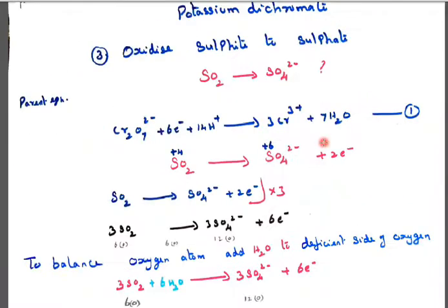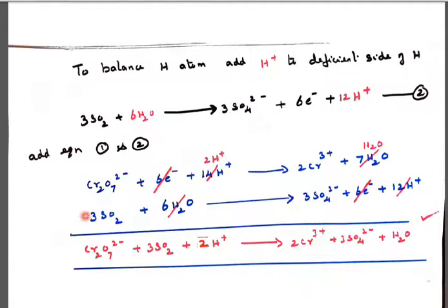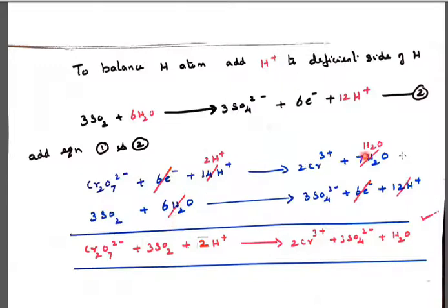Now we can add the first equation and the second equation. First equation: Cr₂O₇²⁻ + 6e⁻ + 14H⁺ → 2Cr³⁺ + 7H₂O. Second equation: 3SO₂ + 6H₂O → 3SO₄²⁻ + 6e⁻ + 12H⁺. Adding them: the 6 electrons cancel on opposite sides. Then 14H⁺ and 12H⁺ cancel, leaving 2H⁺. On the water side, 6H₂O and 7H₂O cancel, leaving 1H₂O.